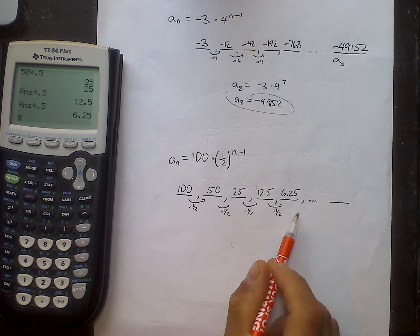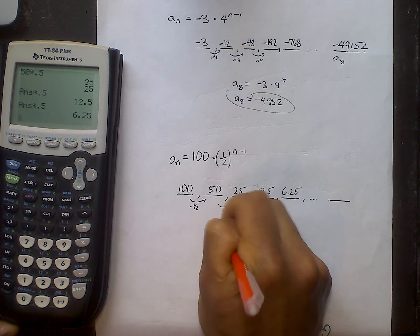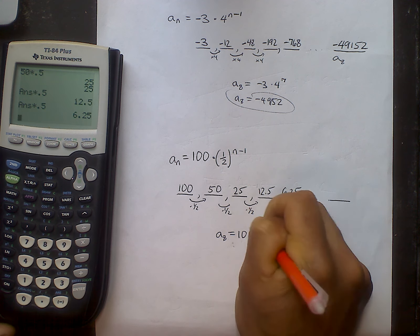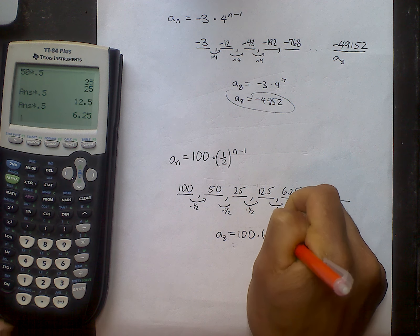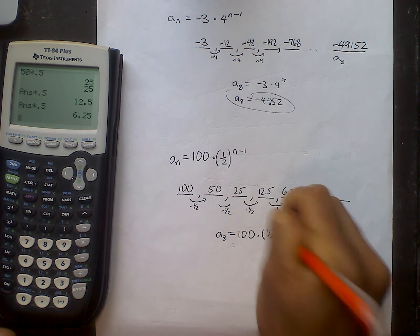If I want to continue this pattern, I can do so a few more times. I'm going to try the explicit formula. If I want to find the 8th term of this list, it's the first term times the common ratio, which I said was 1 half. You can use 0.5. And I raise that to the n minus 1. So in this particular case, I'm raising that 1 half to the 7th power.